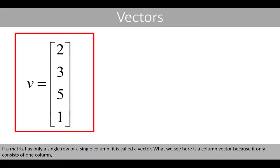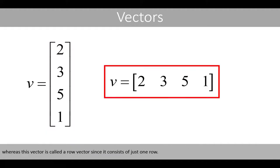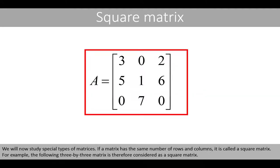If a matrix has only a single row or a single column, it is called a vector. What we see here is a column vector because it only consists of one column, whereas this vector is called a row vector since it only consists of one row. If a matrix has the same number of rows and columns, it is called a square matrix. For example, the following three by three matrix is considered a square matrix.